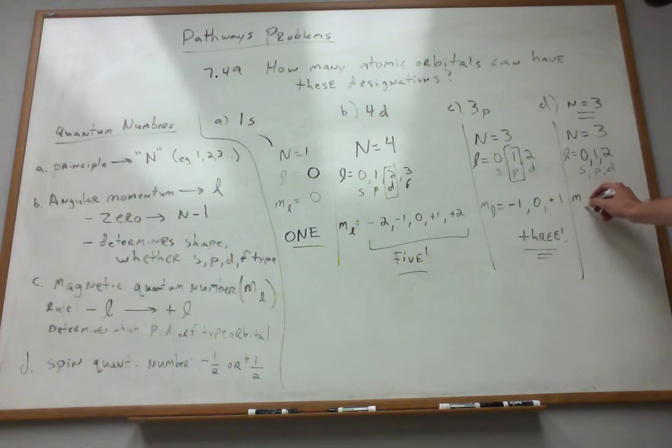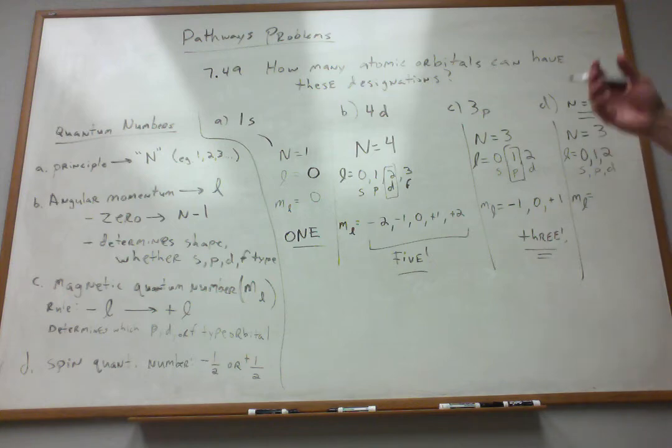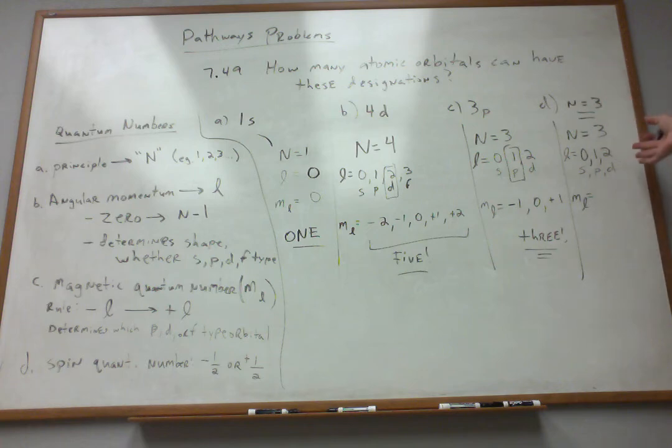The m sub l, my magnetic quantum number. Now, it's a little bit more complicated, because if I want to consider all of my possibilities for n equals 3, I really need to think about everything. And I've got to think about my s, my p, and my d.